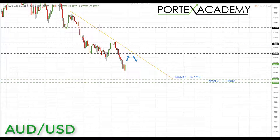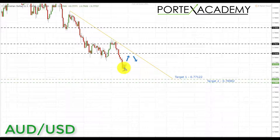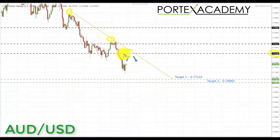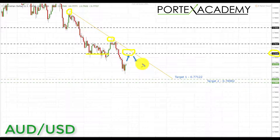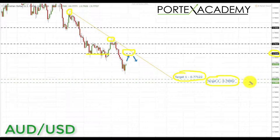The next pair is the AUD/USD. The Aussie US dollar broke down below key areas of support last week, so we're going into this week looking for a correction. If we can get a test of the 0.78160, which is confluence of the downward sloping trend lines as well as the horizontal support broken as resistance, this is a great place to look for shorts and bearish formations, targeting 0.77122 and also 0.76982.